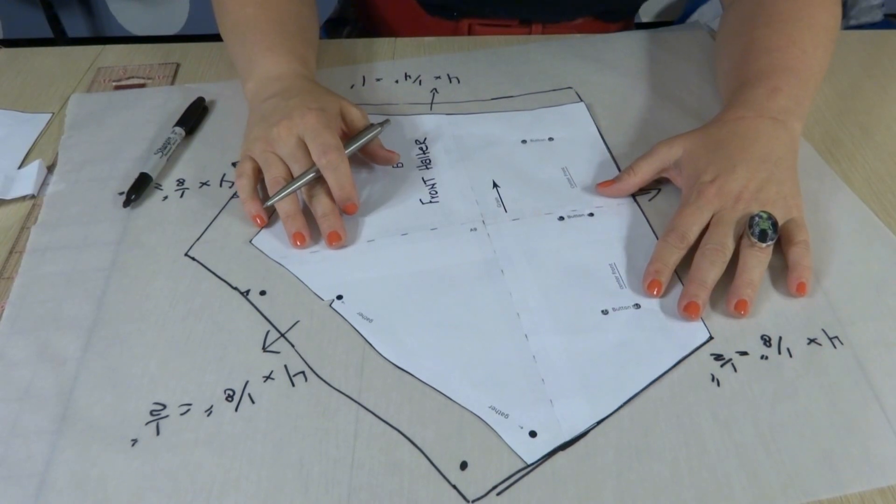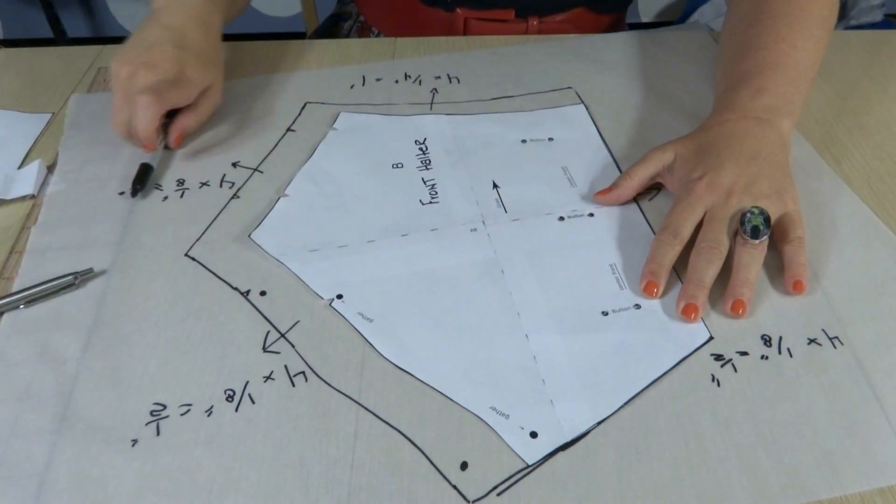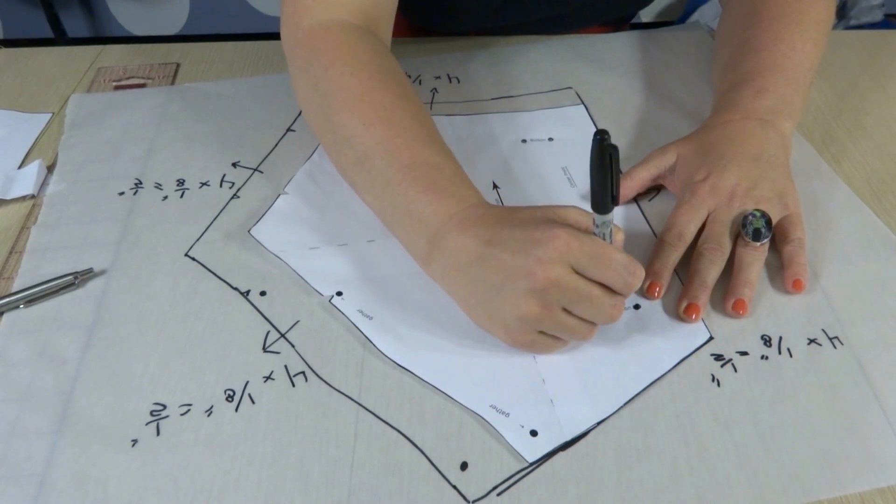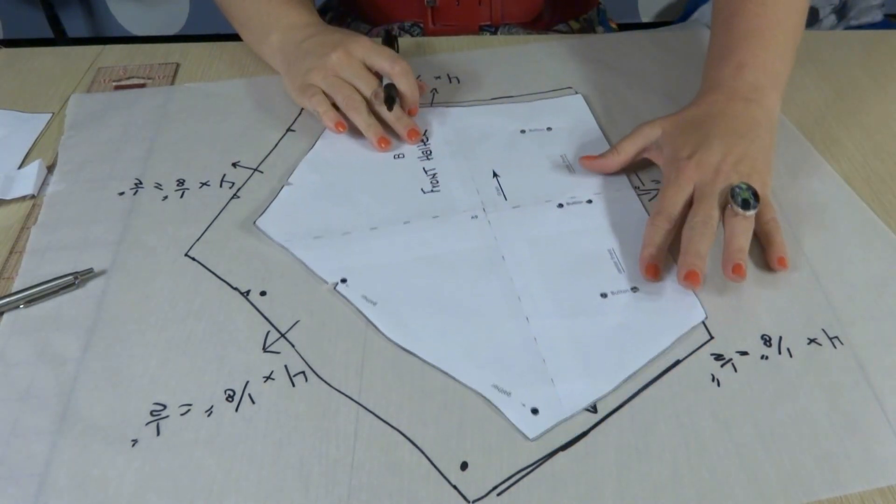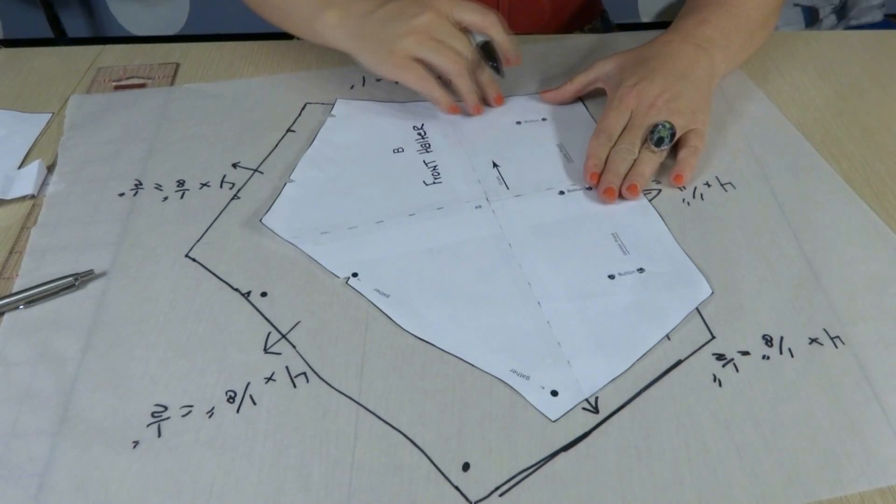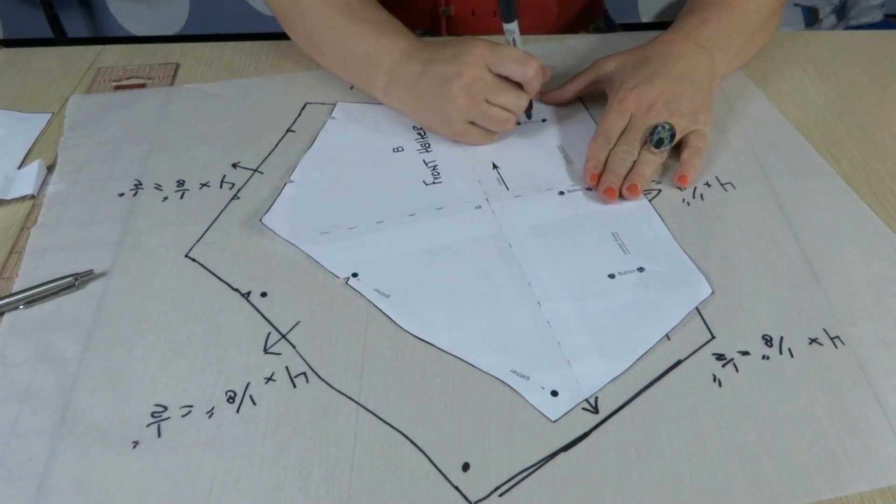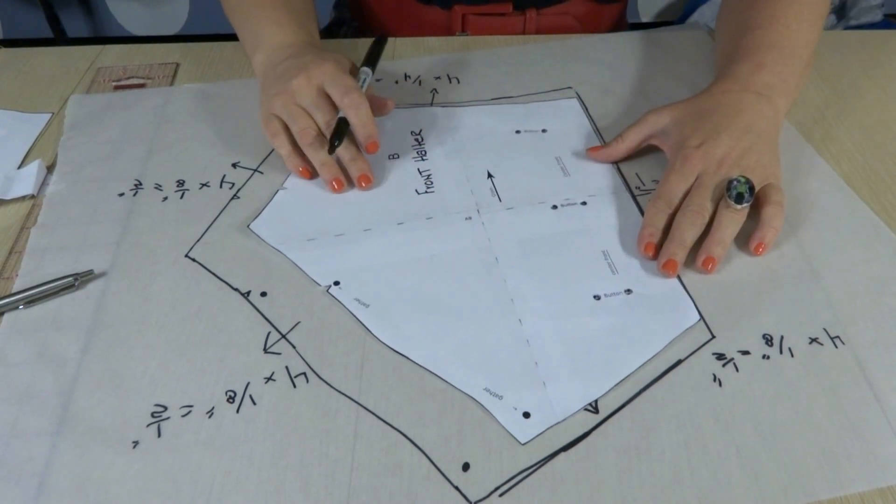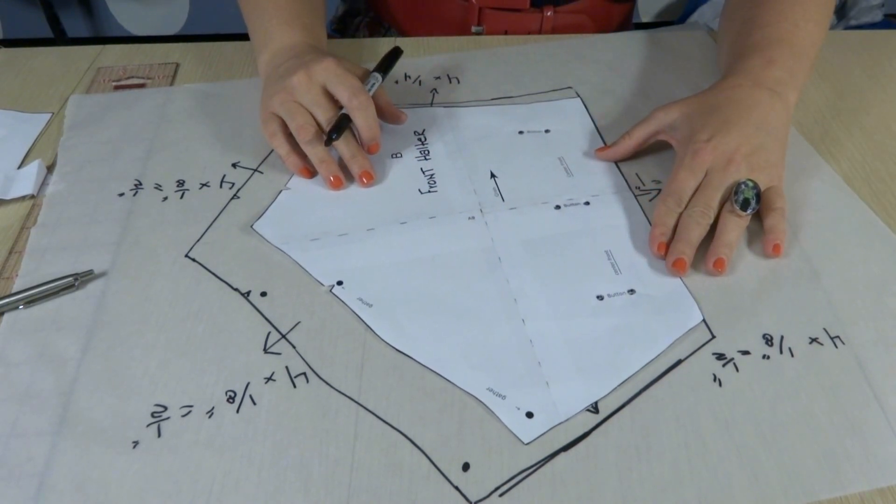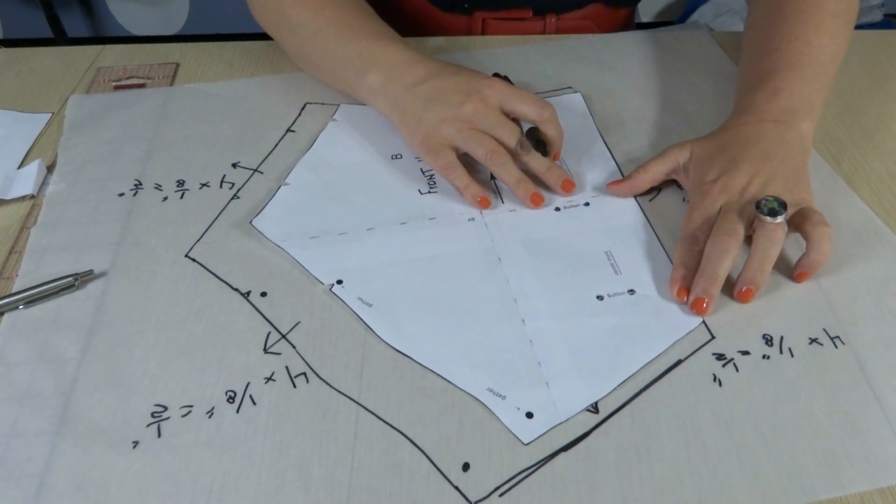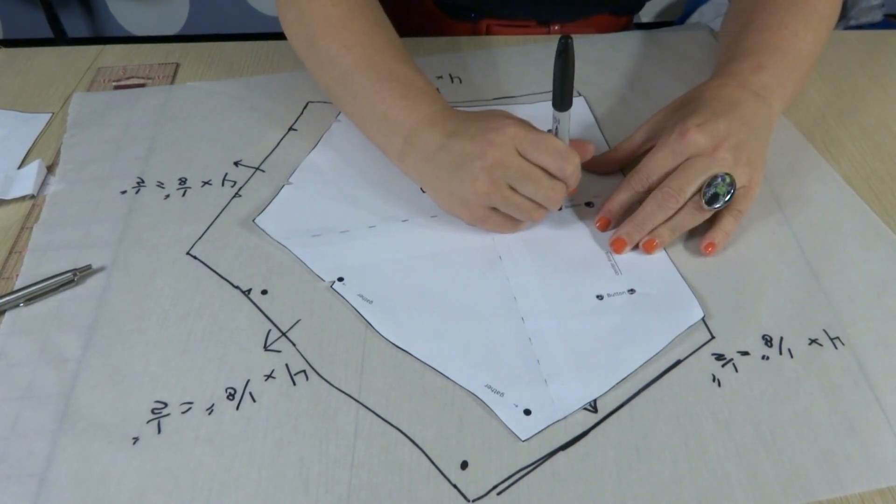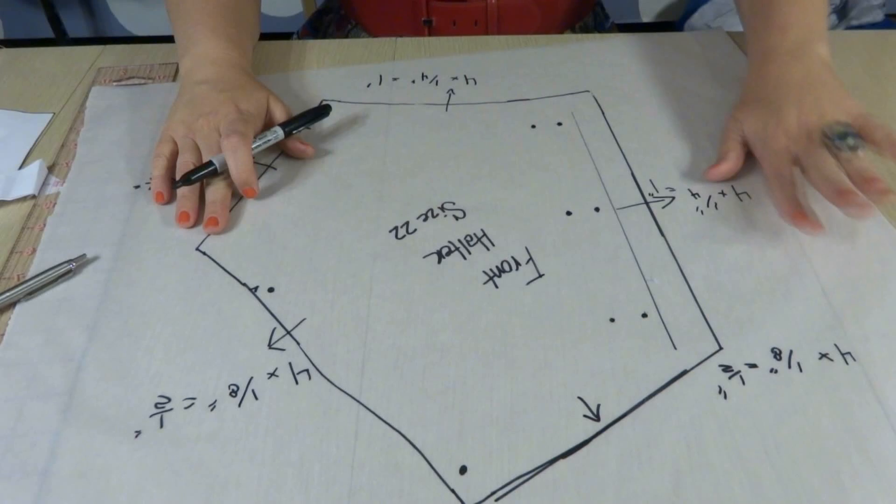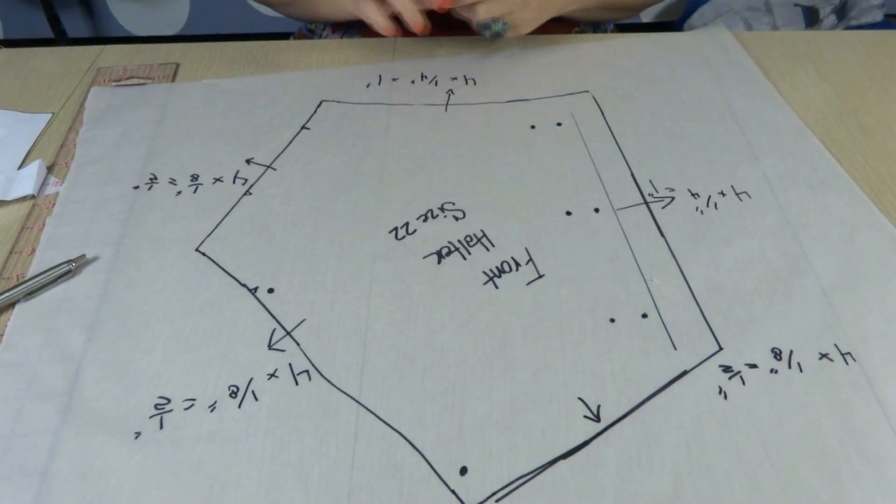So I'm going to punch a hole where the button sections are. I'm going to bring the pattern up to the top to match the button holes up at the top. Then I'm bringing the pattern to the bottom and matching the button holes at the bottom. Then I am centering the pattern as best I can, just eyeballing it, and marking where the buttons go. There we go. Our brand new front halter size 22.